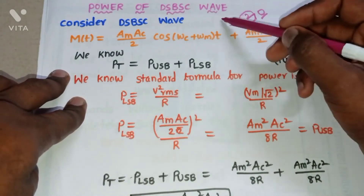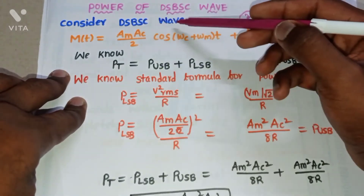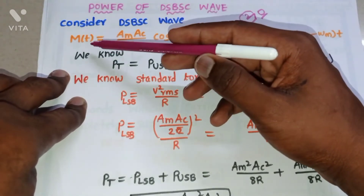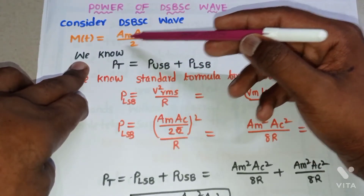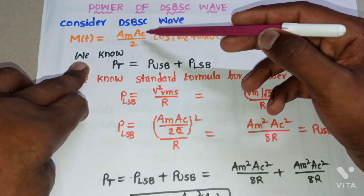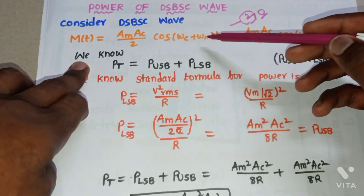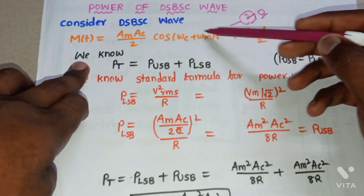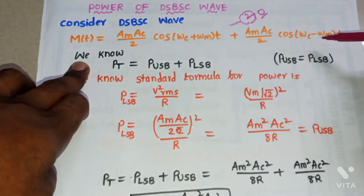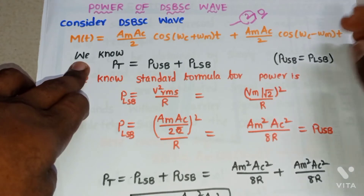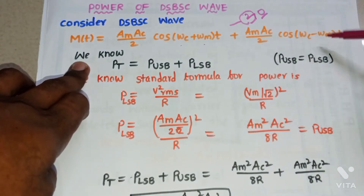In order to calculate the power of the DSBSC wave, consider the standard form of the DSBSC modulated wave: M(t) = (AM·AC/2)·cos(ωc + ωm)t + (AM·AC/2)·cos(ωc − ωm)t. Here, (ωc + ωm) is the upper sideband frequency — the higher frequency band — and (ωc − ωm) is the lower sideband frequency.